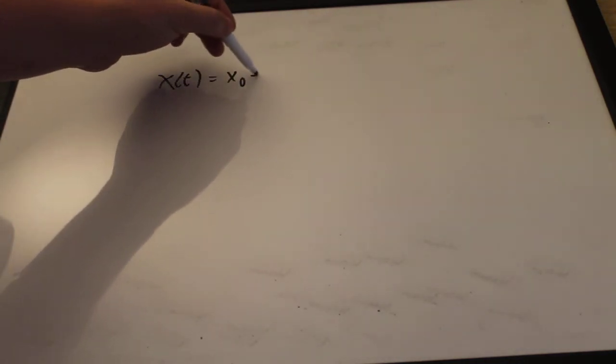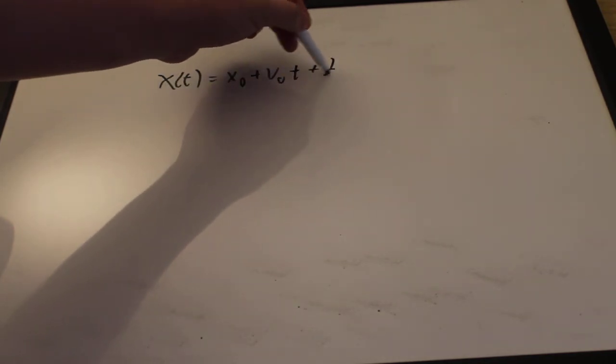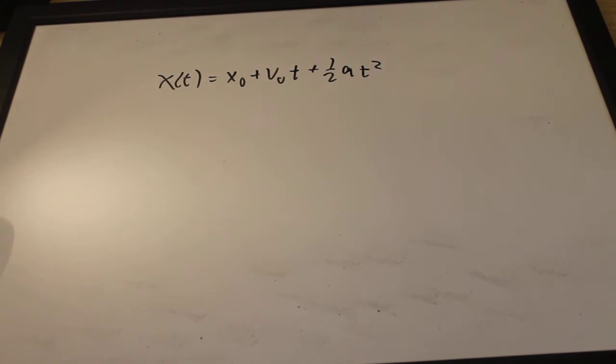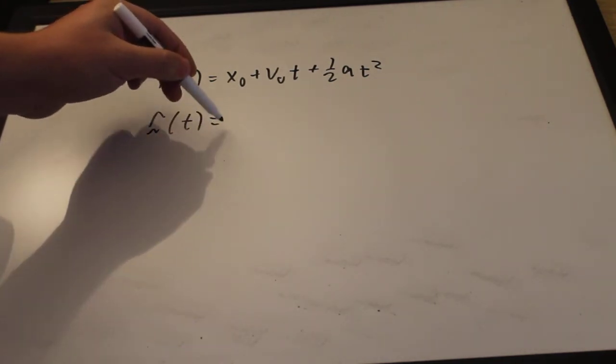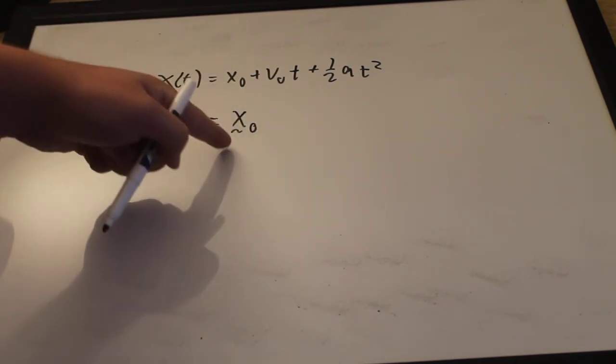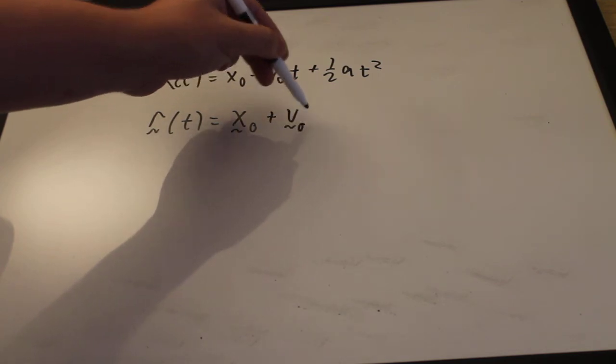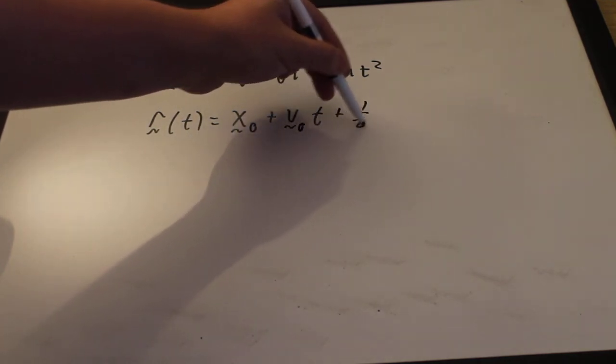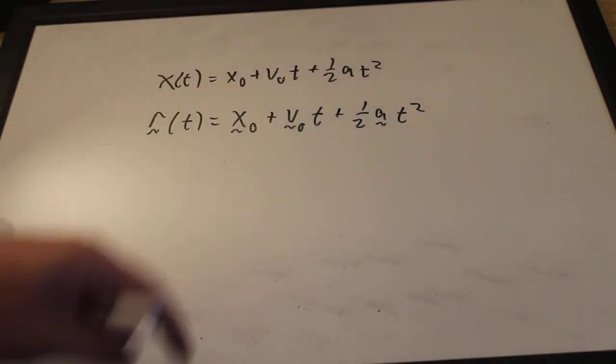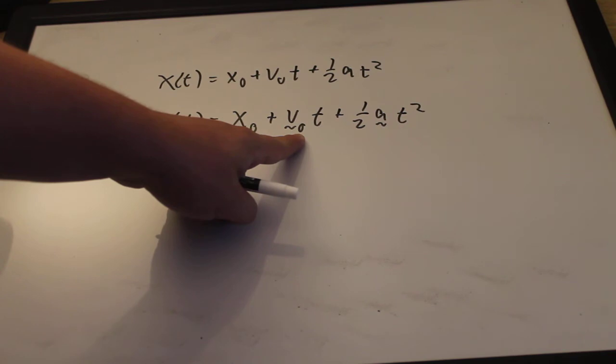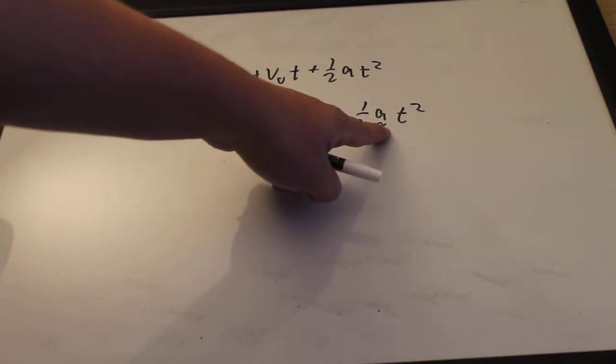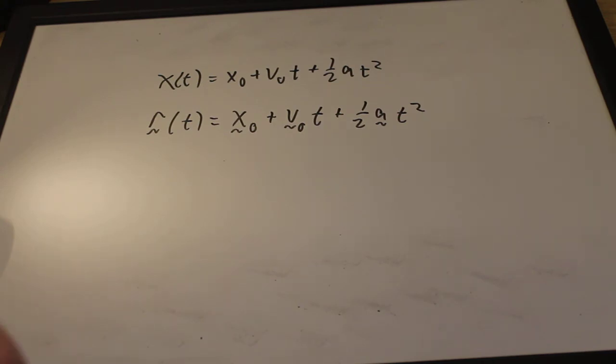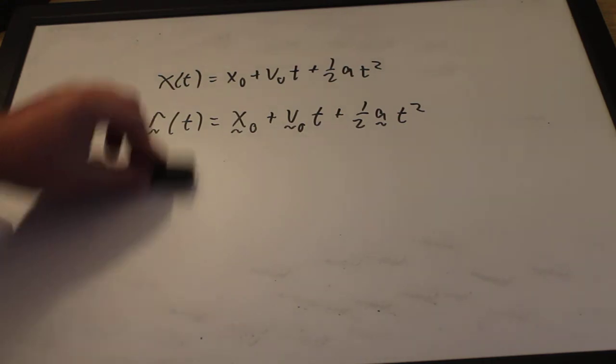So I get the acceleration is equal to x double dot of t x hat plus y double dot y hat plus z double dot z hat. So now we can find the velocity and acceleration given the position, and we can work backwards too if we need to. So where we had the scalar equation for the position in one dimension that we started with, in three dimensions for an object undergoing constant acceleration, instead we get some initial position vector, an initial velocity vector, and this constant acceleration.